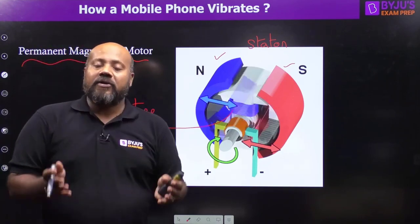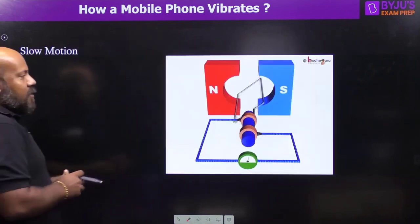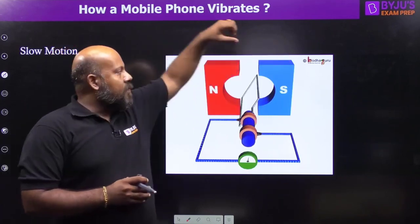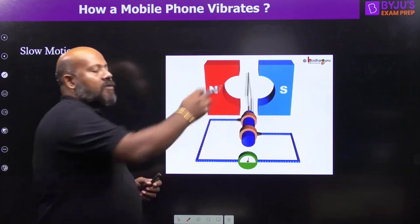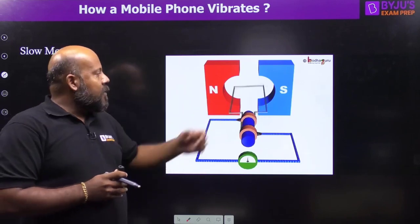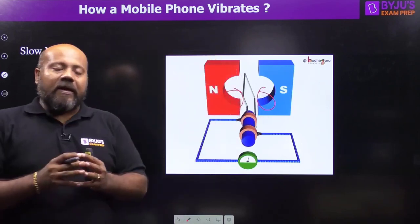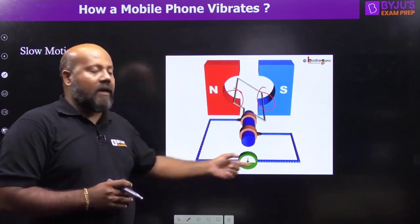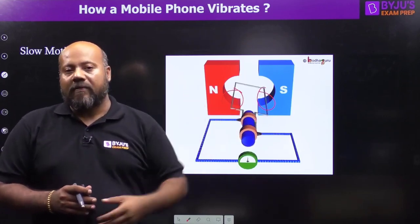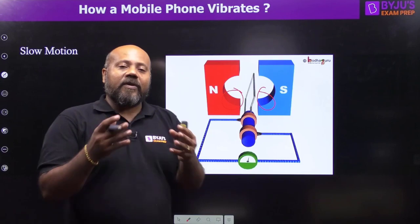Because the rotor has an unbalanced loading, it creates continuous vibrations. In this slow motion view, you can see the north pole and south pole of the permanent magnet. The coil rotates so that flux cutting action occurs, inducing EMF in the conductors. Currents flowing in the circuit establish the armature flux, and the interaction of the main flux and armature flux gives torque so that the motor rotates with vibrations.